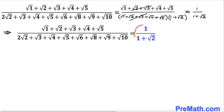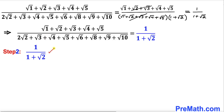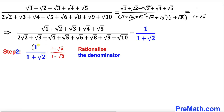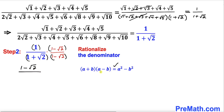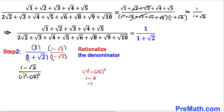Now let's focus on 1 divided by 1 plus square root of 2. We are going to rationalize its denominator by multiplying and dividing by its conjugate, which is 1 minus square root of 2. Multiplying at the top gives us 1 minus square root of 2. At the denominator we apply the identity (a + b)(a − b) = a² − b², so the denominator becomes 1 squared minus square root of 2 whole squared.